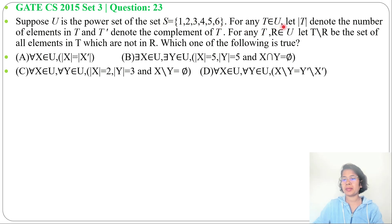For any T belongs to U, let |T| denote the number of elements in T and T' denote the complement of T. For any T, R belongs to U, let T\R be the set of all elements in T which are not in R. It's like difference. Which one of the following is true? And four options are given.